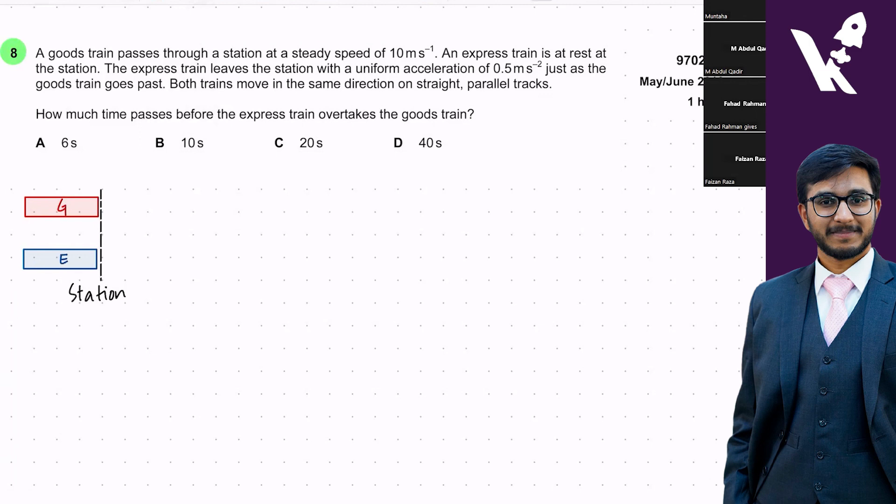The question says the goods train passes through the station at a steady speed of 10 meters per second. The express train is at rest at the station, its initial velocity is zero.